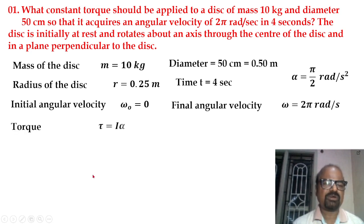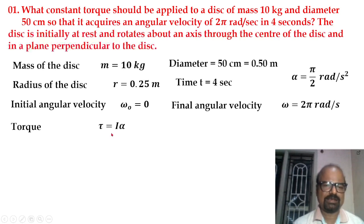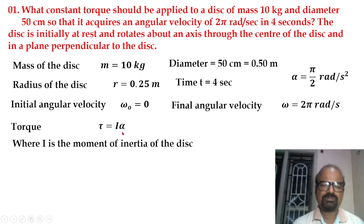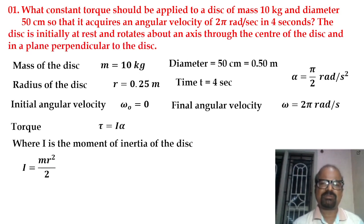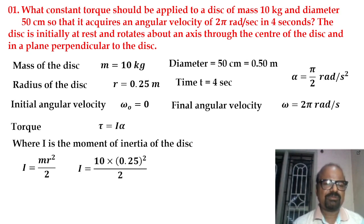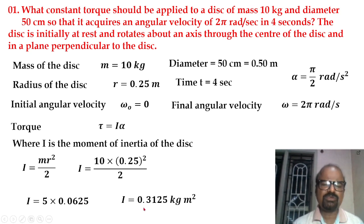Torque is the rotational force equivalent: torque equals I times alpha, where I is the moment of inertia and alpha is angular acceleration. The moment of inertia of a solid disk is mR² divided by 2. Substituting: 10 times 0.25 squared equals 0.0625, giving a moment of inertia of 0.3125 kg·m².